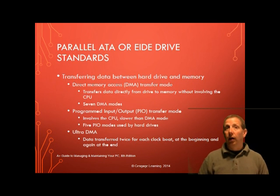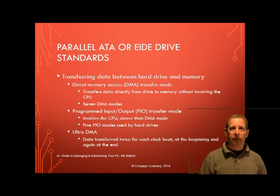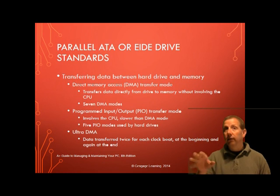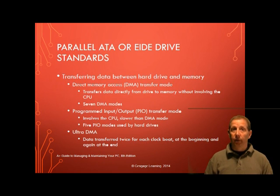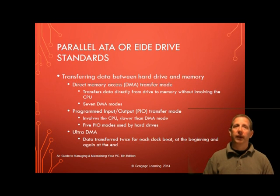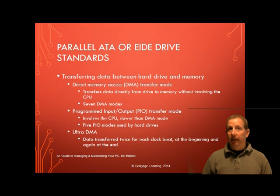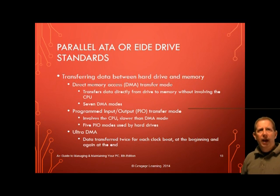A hard drive uses one of two methods to transfer data between the drive and memory: DMA, which is Direct Memory Access, or PIO, which is Programmed Input-Output transfer mode. DMA transfers data directly from the drive to memory without involving the CPU. PIO involves the CPU and is slower and older than DMA. There are five PIO modes from slowest (0) to fastest (4), and seven DMA modes from slowest (0) to fastest (6). All motherboards using IDE today support Ultra DMA, which means data is transferred twice per clock beat — at the beginning and at the end. As the graphic shows behind me, a snip from an older Intel motherboard user guide shows two IDE headers.